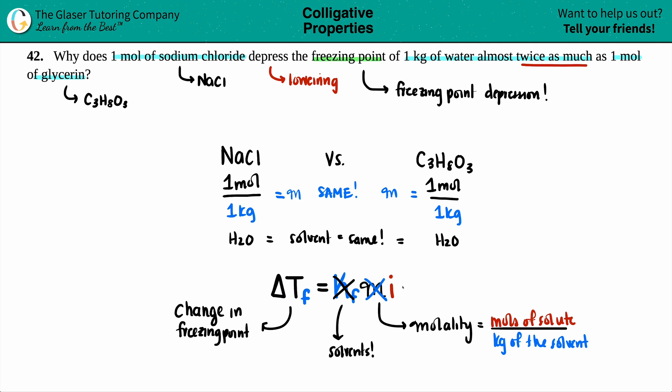It's got to be with this i value. What is an i value? An i value is called a van't Hoff factor. The i value is called a van't Hoff factor. But basically what this means is how many ions dissociated in the solvent.